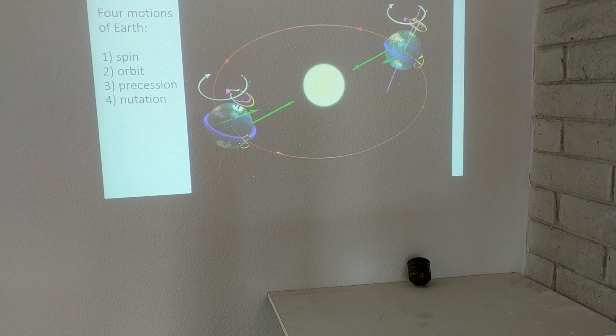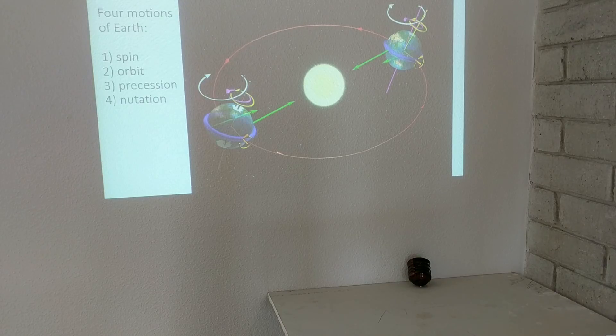The nutation, which is caused by the additional force of the moon pulling on the Earth, changes the rate of precession. The moon is not shown in this diagram, but that additional wobble is called nutation and it produces a cyclical variation of the precession of about 18.6 years.